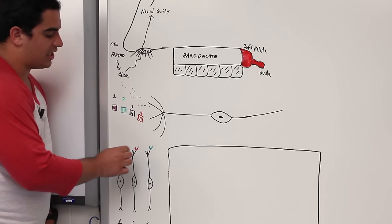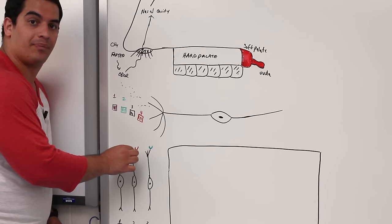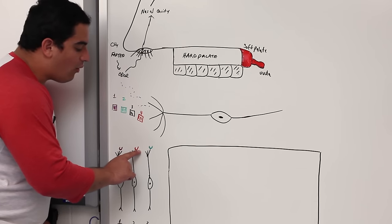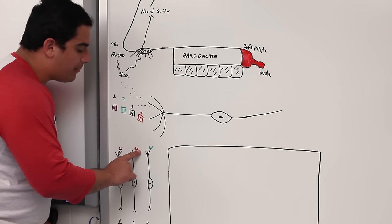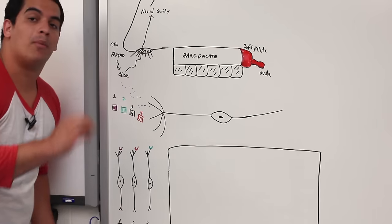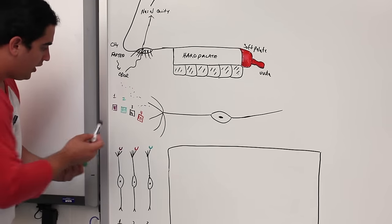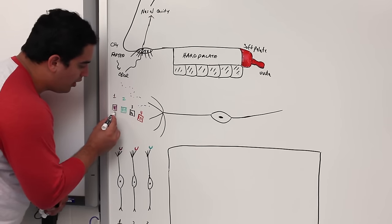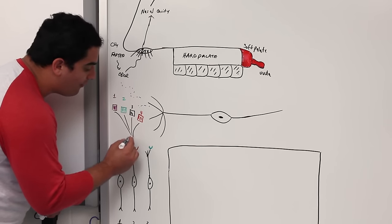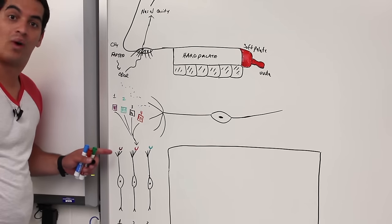Each olfactory neuron is expressing a specific type of olfactory receptor. That receptor could respond to multiple odorants — for example, odors one, two, three, and four could possibly all bind onto that receptor.